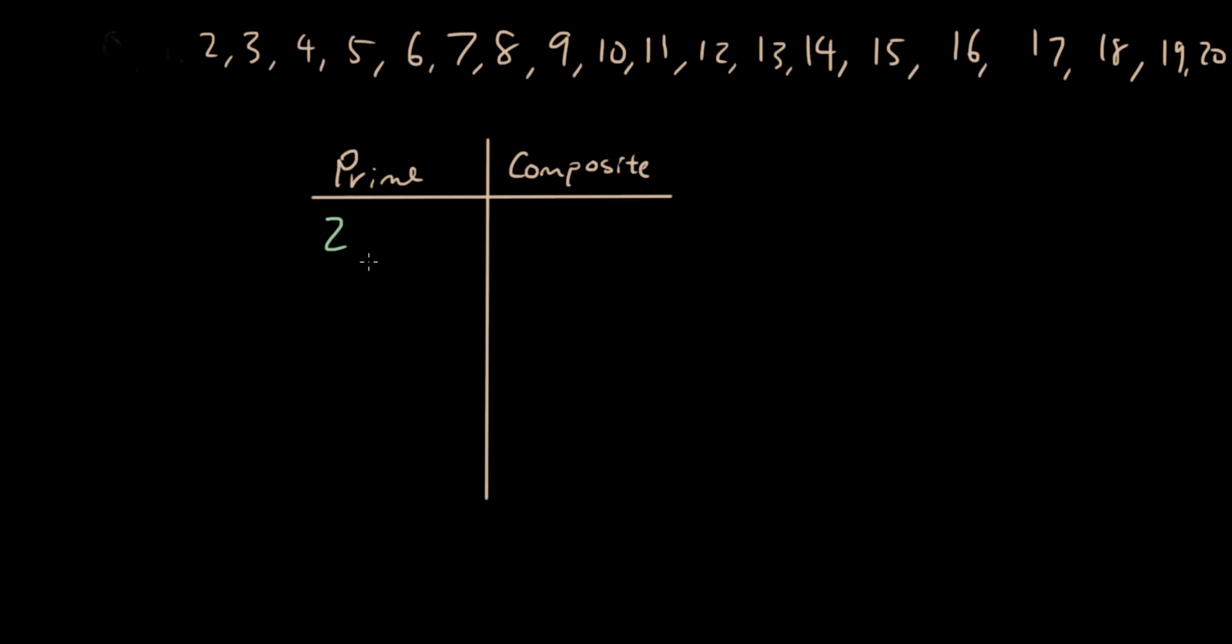Okay, and then 3 is a prime number. 4 is a composite number because 4 equals 2 times 2. 5 is a prime number. 6 is equal to 2 times 3. 7 is a prime number.